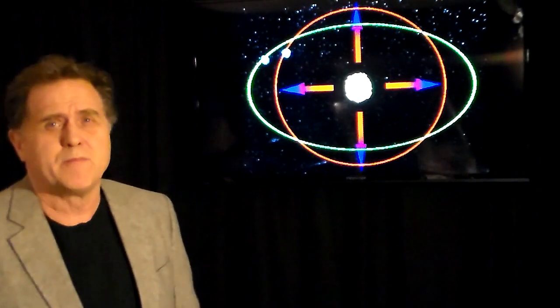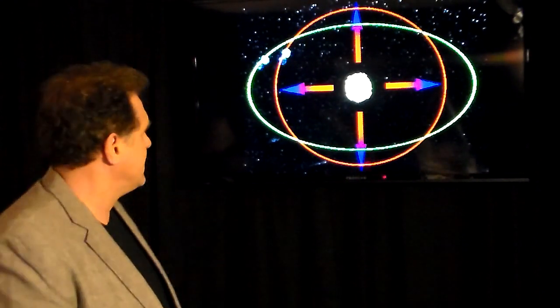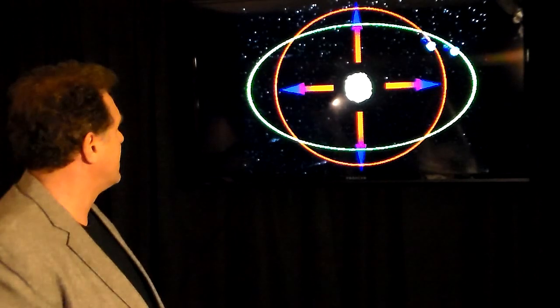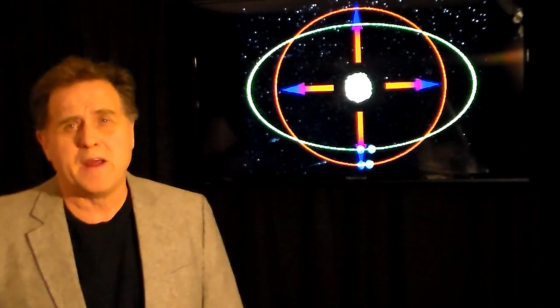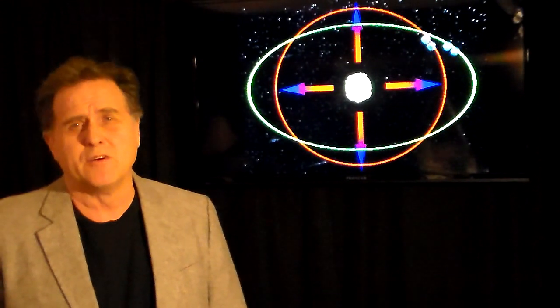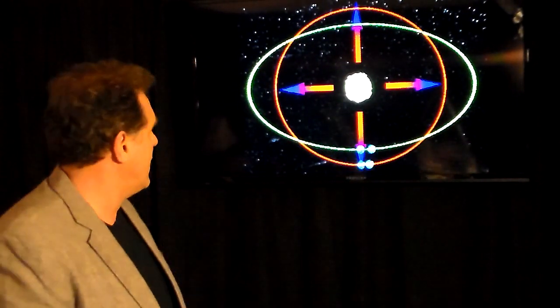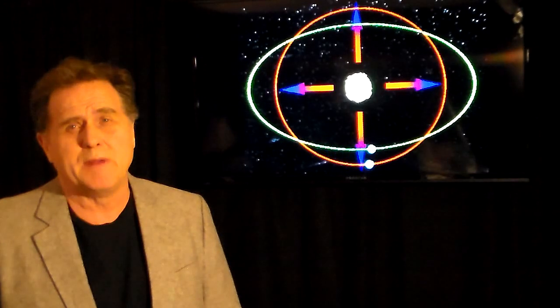All right, here's your basic Milankovitch cycle of driving the ice ages. He theorizes that the Earth's elliptic orbit around the Sun somehow magically goes into a circle around the Sun. Mind you though, the energy received is basically the same.